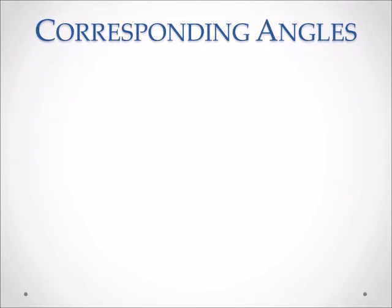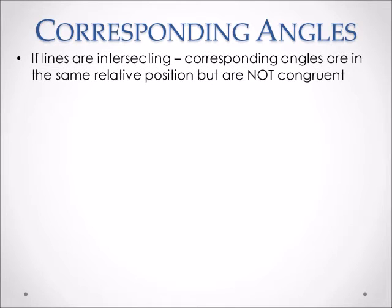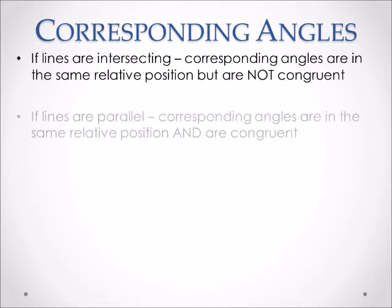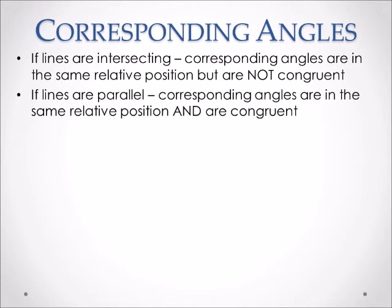Here we have corresponding angles. If the lines are intersecting, the corresponding angles are in the same relative position but are not congruent. Whereas if the lines are parallel, the corresponding angles are also in the same relative position, but they are, in fact, congruent. That is a very important distinction. If the lines are intersecting, the corresponding angles will not be congruent, but if the lines are parallel, then they will be congruent.